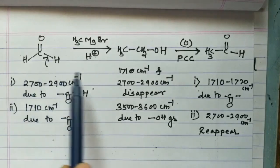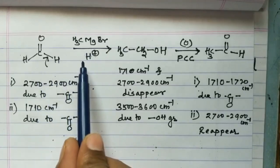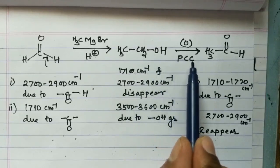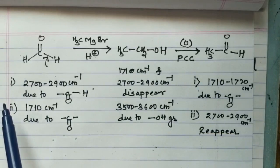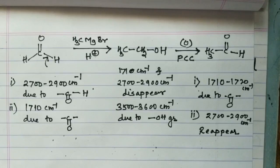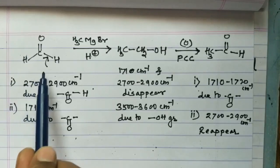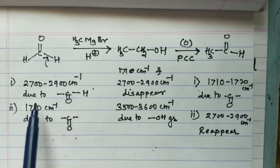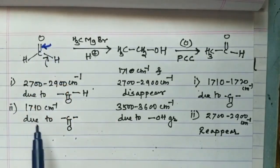Let's take another example: formaldehyde reacted with the Grignard reagent CH₃MgBr followed by hydrolysis gives a primary alcohol, which on mild oxidation with PCC (pyridinium chlorochromate) forms acetaldehyde. Initially, formaldehyde shows two characteristic frequencies: the aldehydic C–H stretching frequency at 2700–2900 cm⁻¹ and the carbonyl group at 1710 cm⁻¹.